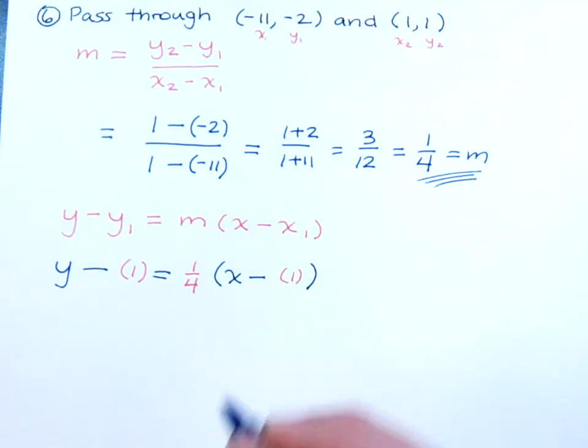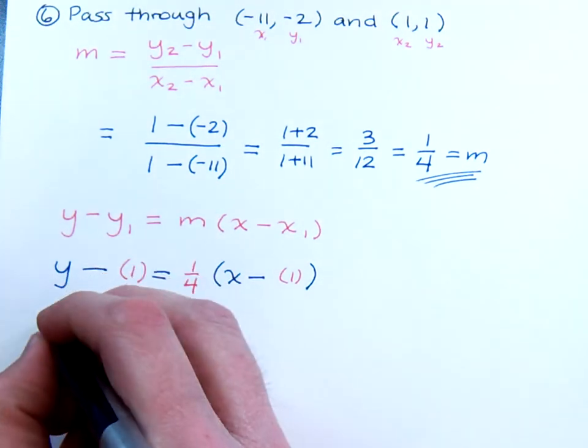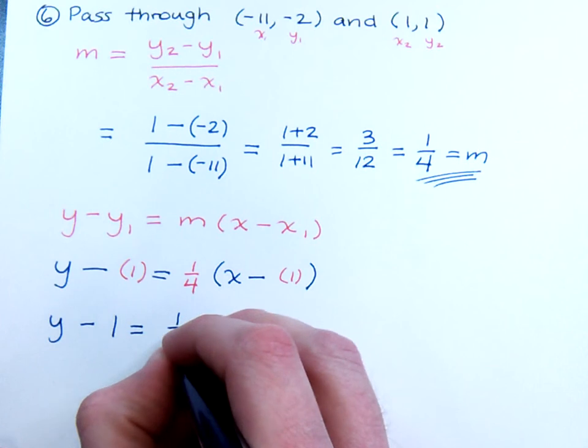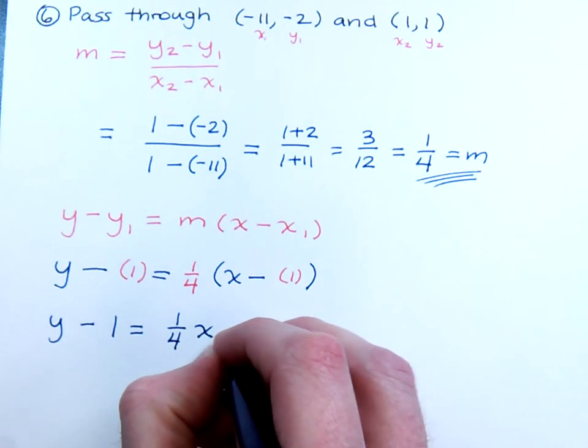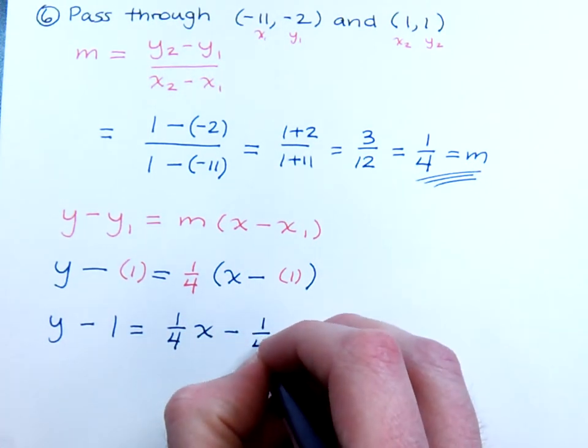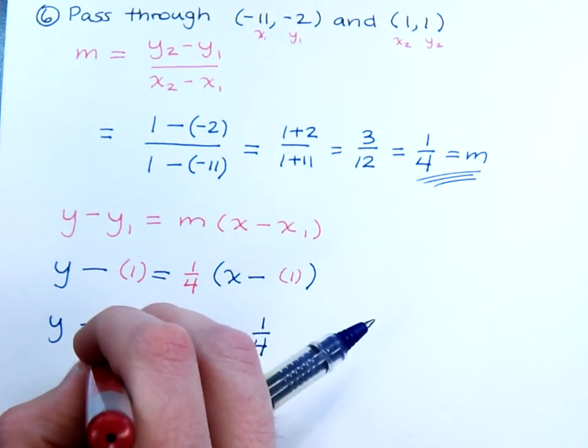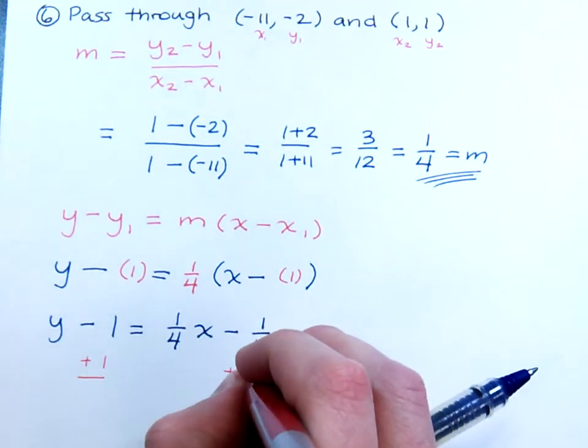Okay, so just finishing this. You have y minus 1 equals 1 fourth x minus 1 fourth when you distribute. Add the 1 to both sides to get y by itself.